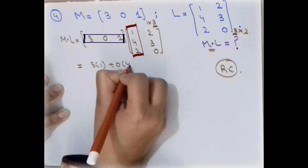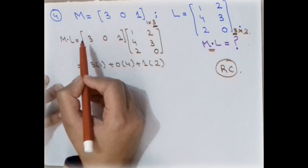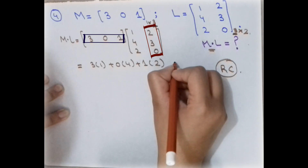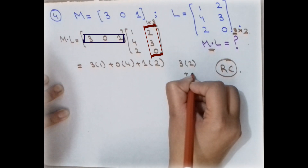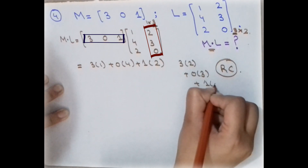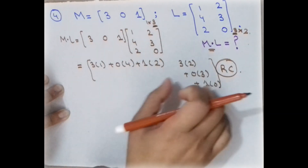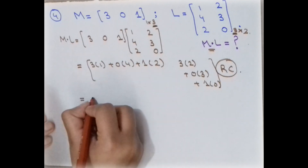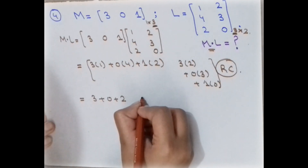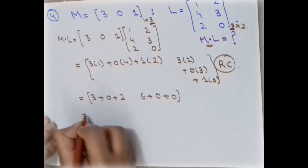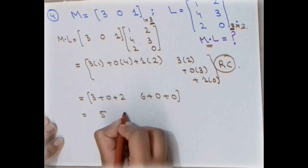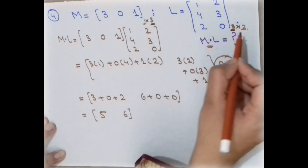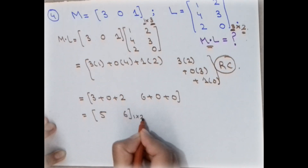Now fix the row and multiply with the second column: 3×2 plus 0×3 plus 1×0. Simplifying: first entry is 3+0+2=5, and second entry is 6+0+0=6. So the final matrix is [5, 6], and the order of the final result is 1 by 2.